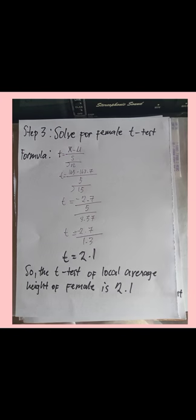Step 3: Solve for the female t-test. The formula is: t = (sample mean − population mean) / (standard deviation of the sample / square root of sample size). So, t = (165 − 167.7) / (5 / √15) = −2.7 / (5 / 3.57) = −2.7 / 1.3, so the result of the female t-test is equal to −2.1.